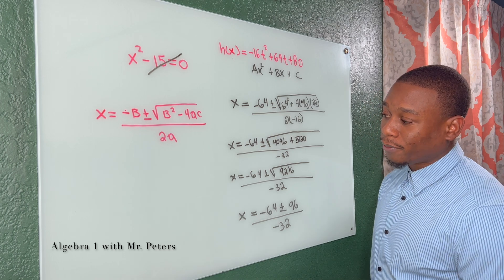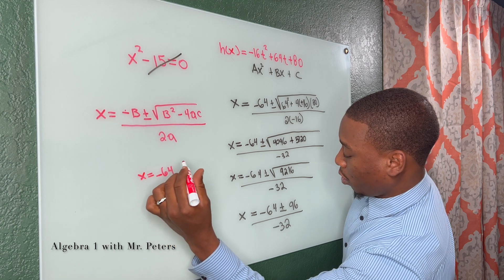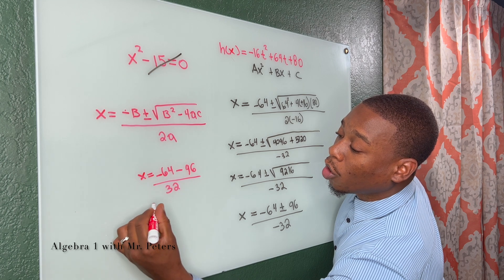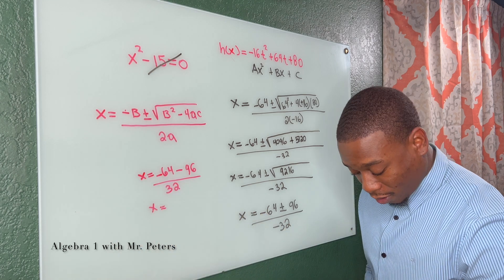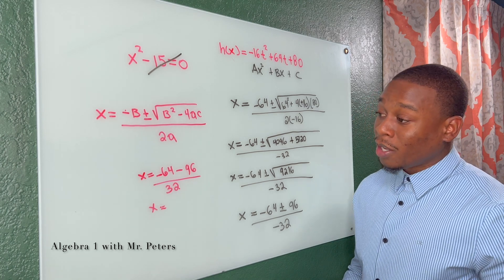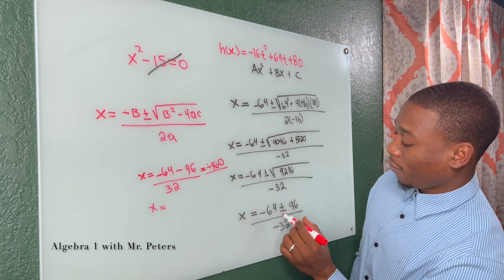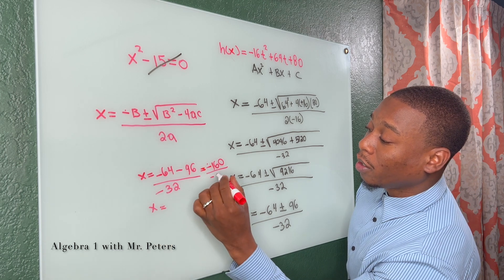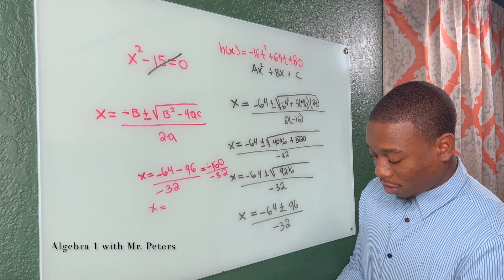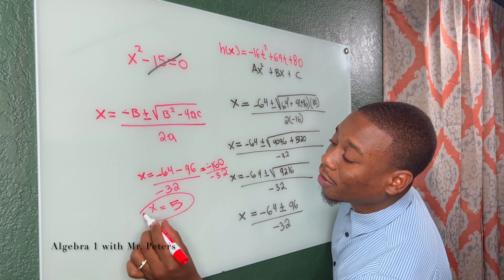So answer number one, x is equal to negative 64 minus 96 over 32. Once we simplify, we're going to get negative 160 all over negative 32, which is going to give us 5. So my first x is a positive 5.